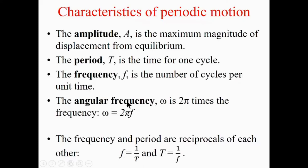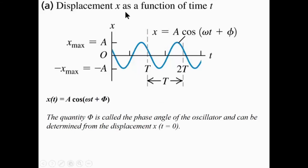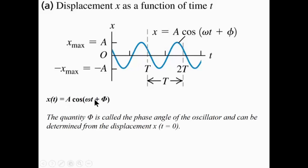Angular frequency ω equals 2π times the linear frequency. A simple harmonic oscillation can be represented by the equation x(t) = A cos(ωt + φ), where A is the amplitude, ω is the angular frequency, and φ is the initial phase angle. The initial phase is included because the oscillation could start from any position — not necessarily from maximum amplitude or zero.